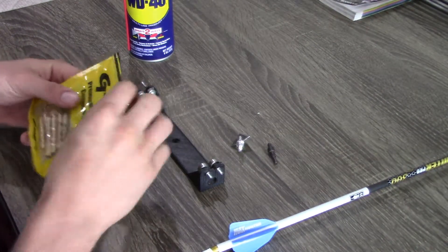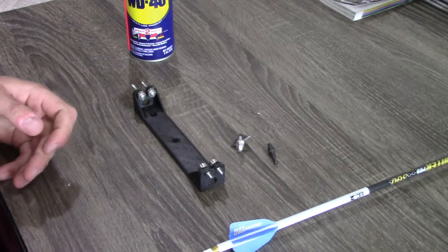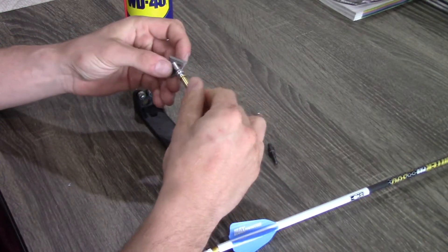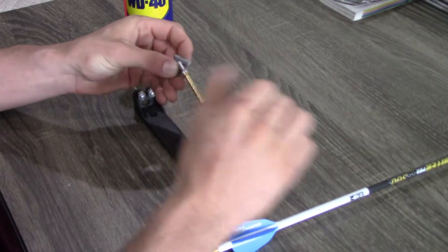After they've cured for a day, I'm going to install my inserts. I chose to go with a 100-grain brass insert up front. I'm trying to get a high front of center to make the arrow pulled rather than pushed when it's shot.